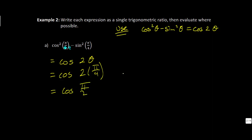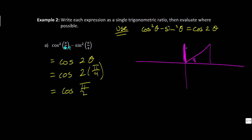Now what is cosine of pi over 2? Drawing the triangle: pi over 2 is 90 degrees, so it points straight up. This gives an imaginary triangle where the adjacent side is 0, the vertical side is 1, and the hypotenuse is 1. The ratio for cosine is adjacent over hypotenuse, which is 0 over 1. So cosine of pi over 2 equals 0, without ever touching a calculator.